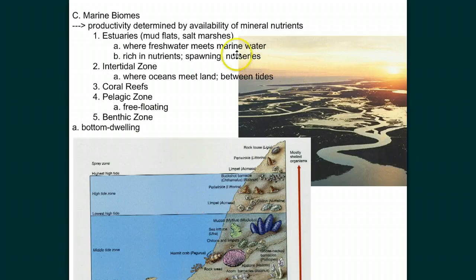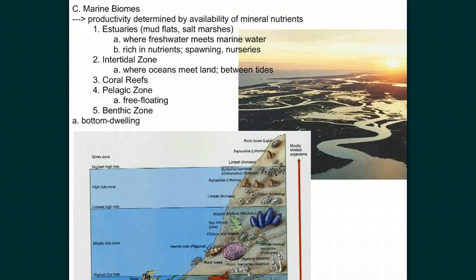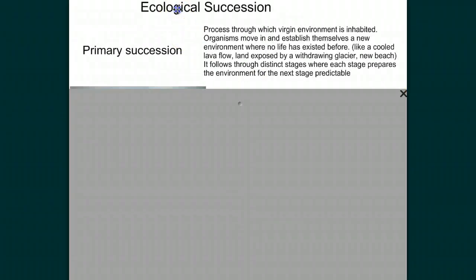I want to point out that estuaries are a very important part of the basis of the food chain. Coral reefs also, from the health of the ocean standpoint — those two areas need to be protected from industrial processes and overdevelopment.